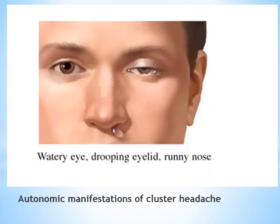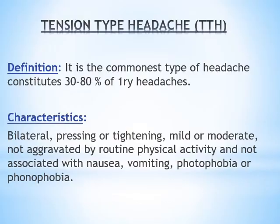This picture shows the autonomic manifestations which may occur during a cluster headache attack, including lacrimation and running nose. The third and most common type of primary headache is tension-type headache, constituting between 30% and 80% of primary headaches. It may be bilateral, pressing in nature, mild to moderate in severity, not aggravated by routine physical activity, and not associated with nausea, vomiting, photophobia, or phonophobia — to differentiate it from migraine headache.